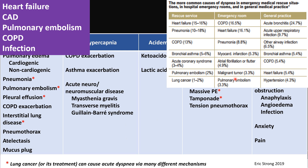Here we can see the incidence of each cause across different clinical settings — the rescue field, the emergency department, and general practice. As you can see, all five categories account for most cases of dyspnea. Traditionally, physical exam, EKG, chest X-ray, and blood tests can most of the time help differentiate the cause of dyspnea.